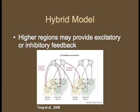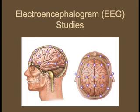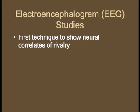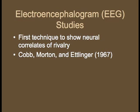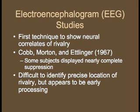Now let's take a look at some of the studies that provided evidence for this model. An electroencephalogram, or EEG, measures electrical activity of the brain via external electrodes, as shown in the picture here. EEG studies were the first to show neural correlates of binocular rivalry. A 1967 study by Cobb, Morton, and Etlinger found that some subjects exhibited almost complete suppression, equal to the physical alternation of the images. EEGs are limited, however, because it is difficult to identify the precise location of potentials. But because suppression appears to have occurred by the occipital lobe, it was inferred that rivalry takes place prior to the primary visual cortex.